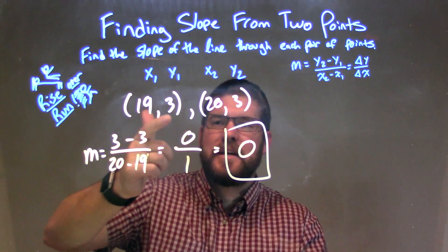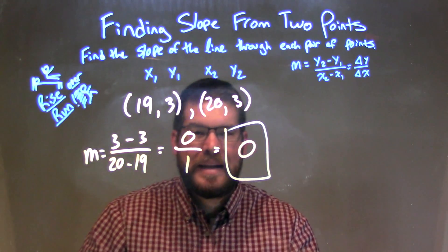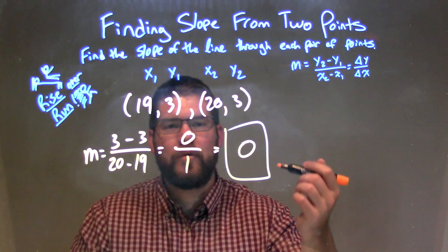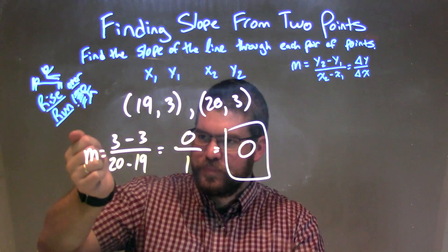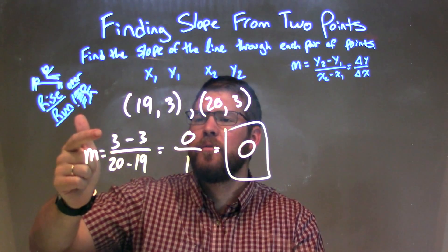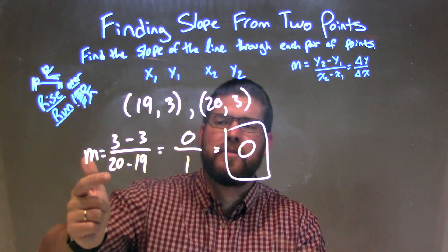Let's recap. Our two points are (19, 3) and (20, 3). We needed to find the slope, our rise over run, our change in y over change in x. So we have our slope formula: y2 minus y1 over x2 minus x1.